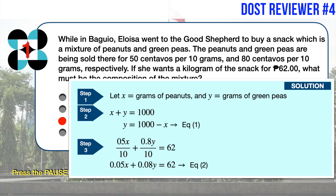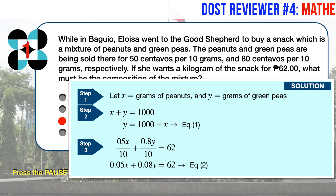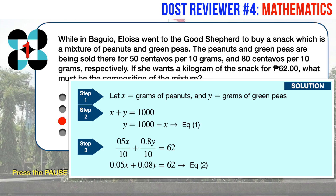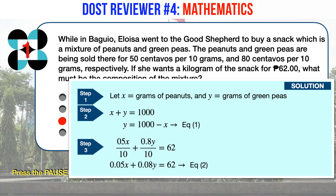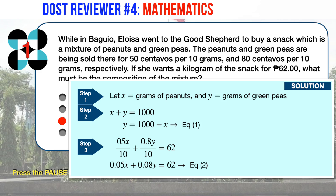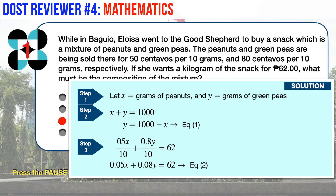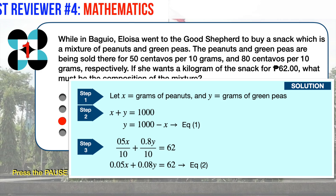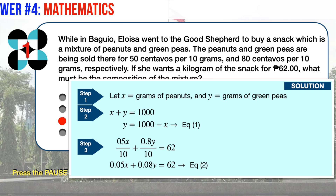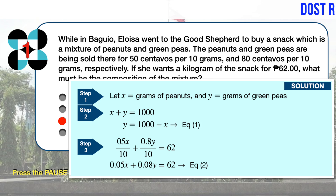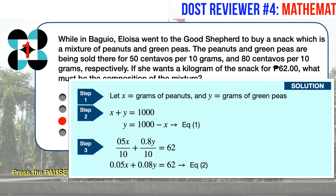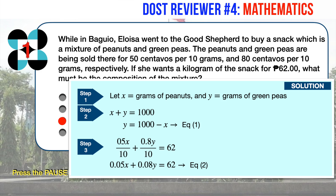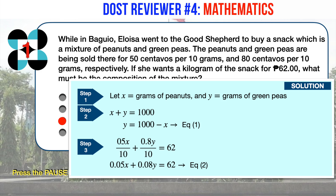Peanuts cost 50 centavos per 10 grams, green peas cost 80 centavos per 10 grams, and Aloysia wants a kilogram for a fixed cost of 62 pesos. We can express this as 0.5X over 10, plus 0.8Y over 10, equals 62. Simplifying, we arrive at 0.05X plus 0.08Y equals 62. Let's label this as equation 2.